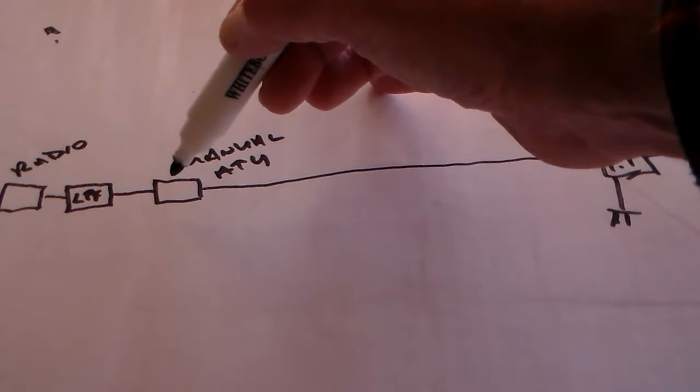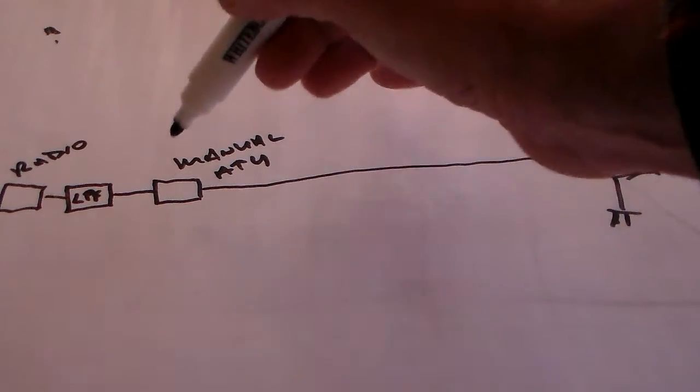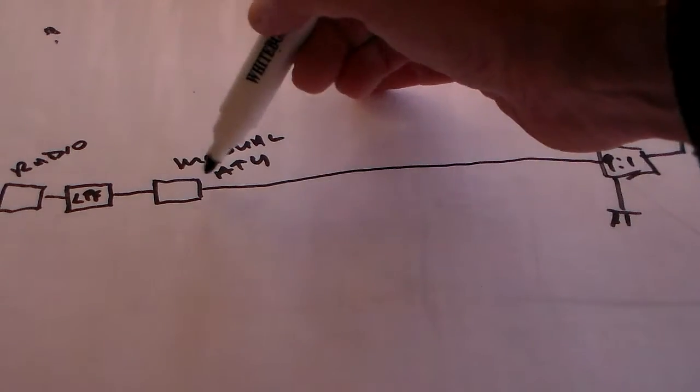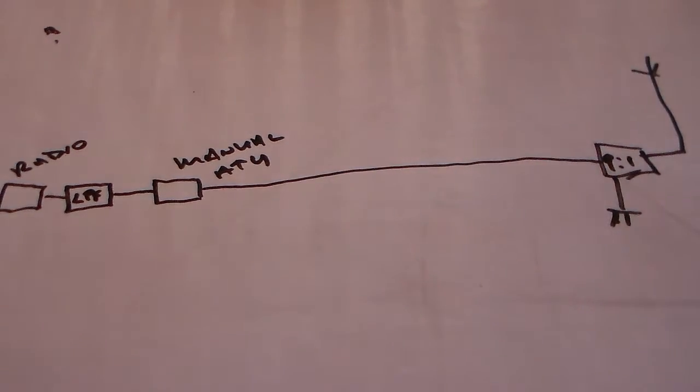So you don't really need this in line. You can just press that button, take that out of line. Or just give it a little nip if it just needs it with the manual ATU, just to bring it in.